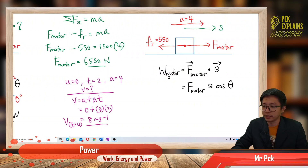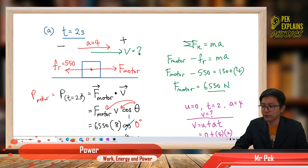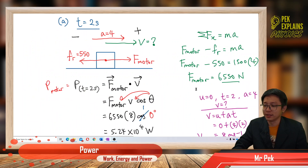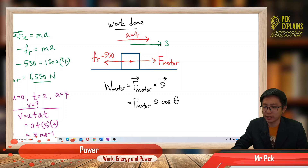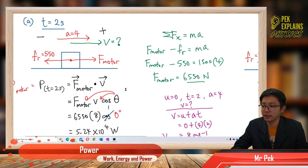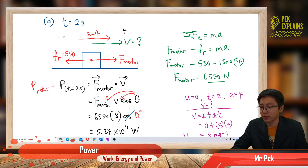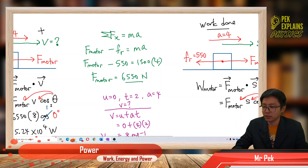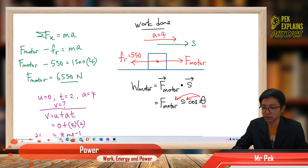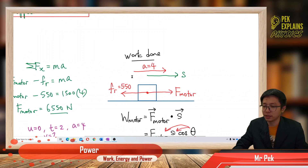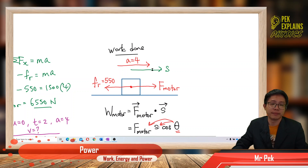There is a similarity between power and work done. For instantaneous power, we use F dot V. For work done, we use F dot S. For work done, we draw displacement and angle theta is the angle between force and displacement. But for power, angle theta is between force and velocity. Both use the dot product with cos theta — power uses velocity, work done uses displacement.